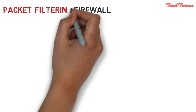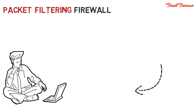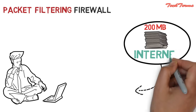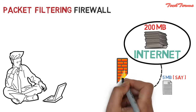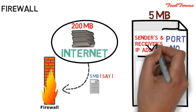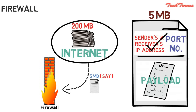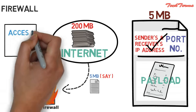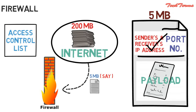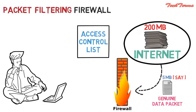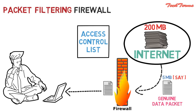Starting with packet filtering firewall. Suppose I am downloading a file from the internet. When the data packet arrives at a packet filtering firewall, it only checks the sender's and the receiver's IP address and the port number present in the data packet. The rules written in a list called access control list are used for data packet verification. If everything is okay, then the data packet is allowed to pass through the packet filtering firewall and then to my computer.